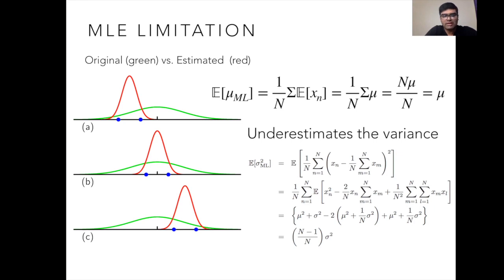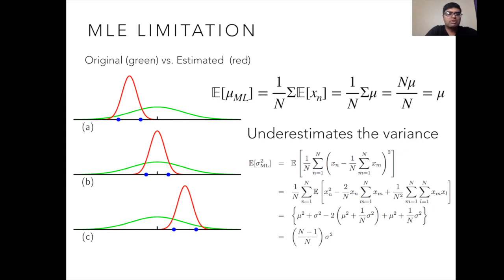This is proved by deriving that the expected value of the maximum likelihood estimate of variance equals (n−1)/n × σ² instead of σ². Since this quantity is less than 1, multiplying by it decreases the true variance. The variance estimate in each case is not equal to the variance of the original green distribution, leading to bias. If you use this in generative modeling, the estimated distribution will always sample points in a narrow region, while the actual distribution has a fair amount of probability mass elsewhere — so that's why it is a biased distribution.